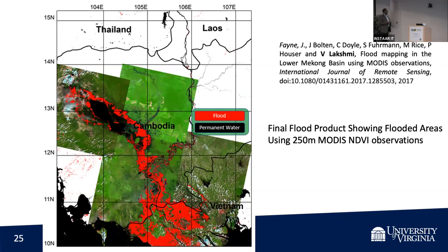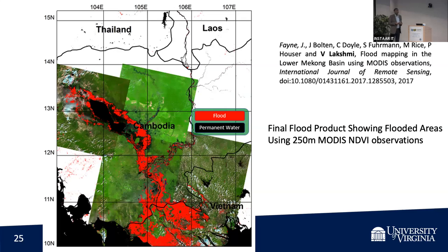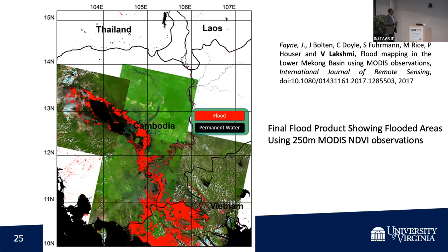The last flood example was preparing a MODIS map at one kilometer for the whole lower Mekong for 2003 to 2015 to demarcate flooded areas. This was done with comparisons using both active and passive sensors and published a couple of years ago.